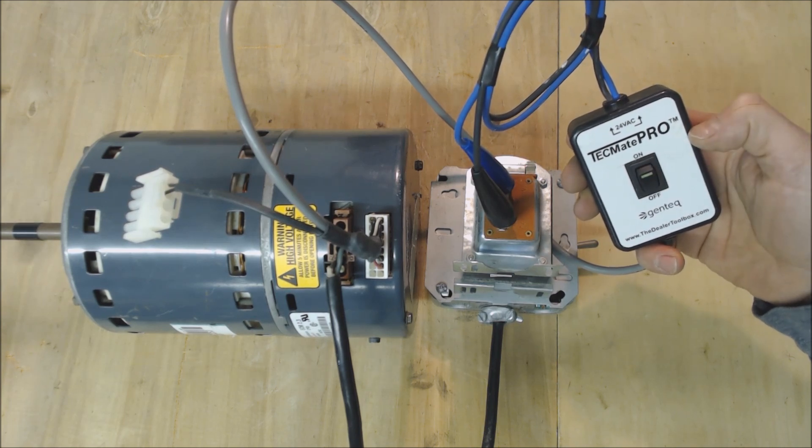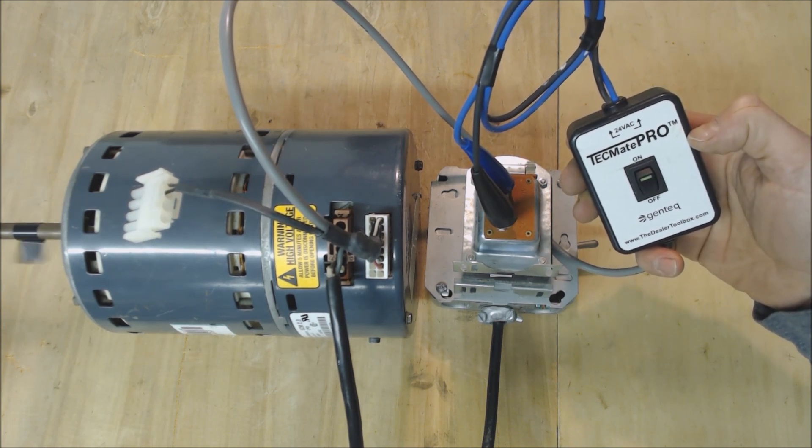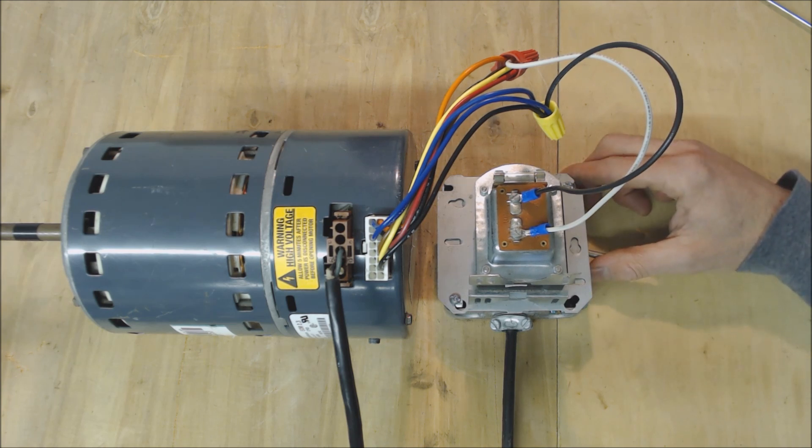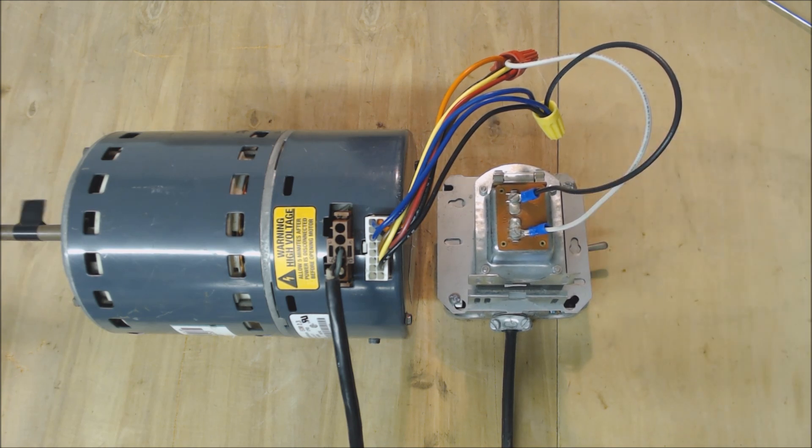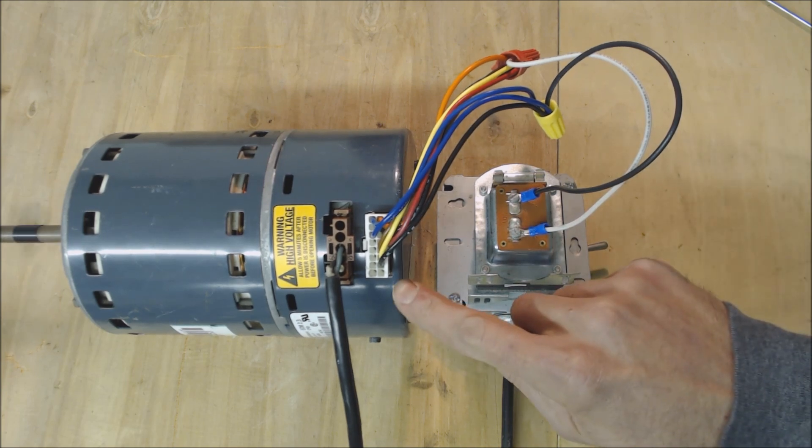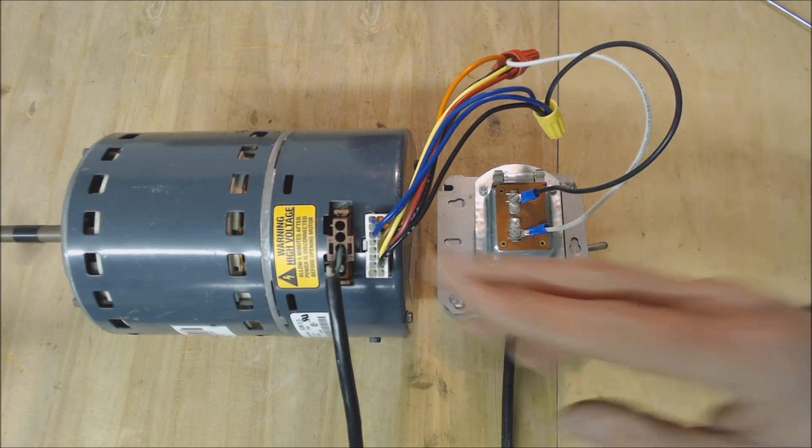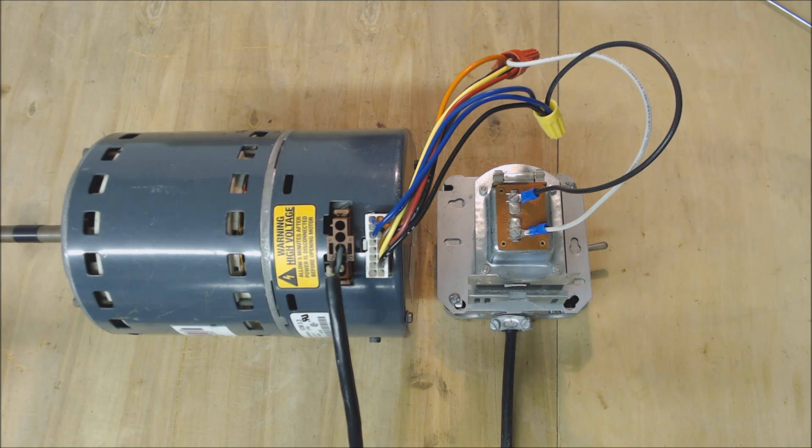So now we're going to go ahead and turn this off and we're going to connect our homemade one. We're going to go ahead and apply power to the transformer and turn it on. So now we're sending voltage over to our pin connector and that works just as well. So that's how you do it.